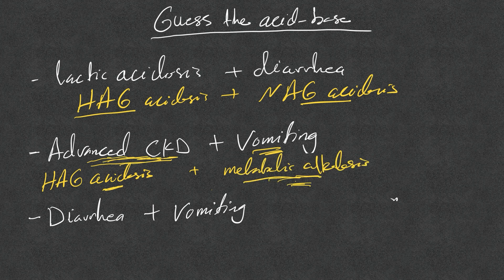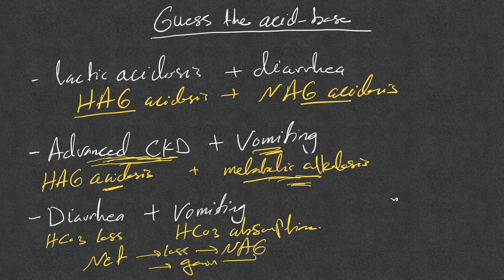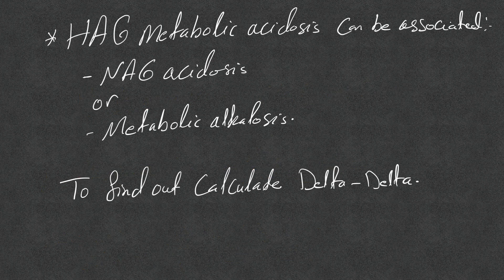Diarrhea and vomiting together: diarrhea causes bicarb loss, vomiting causes bicarb absorption. The outcome depends on the net. If net loss, we get normal anion gap metabolic acidosis; if net gain, we get metabolic alkalosis.